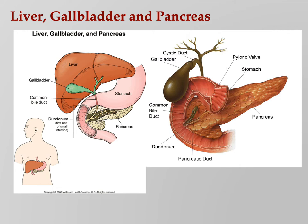We are now going to talk about the accessory structures. Remember, accessory structures are the liver, gallbladder, and pancreas. No food goes into these; however, they produce secretions that will help digest food.